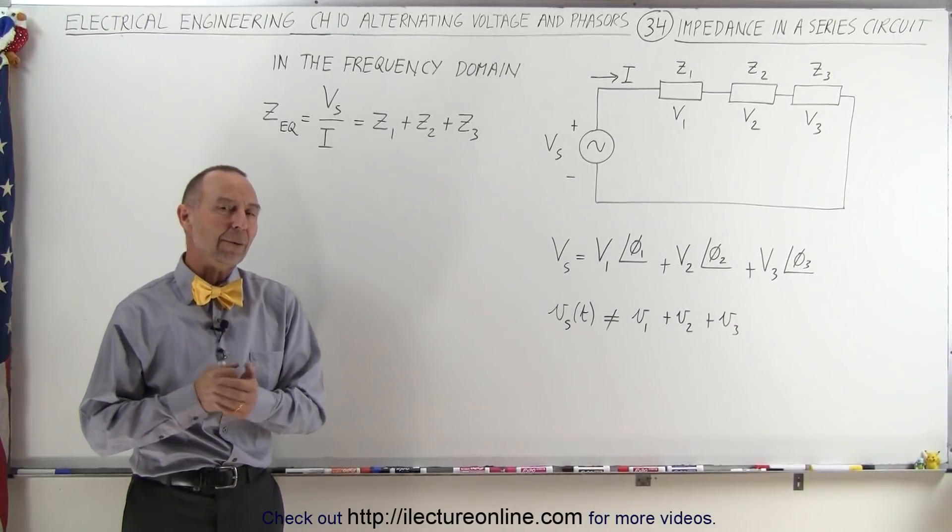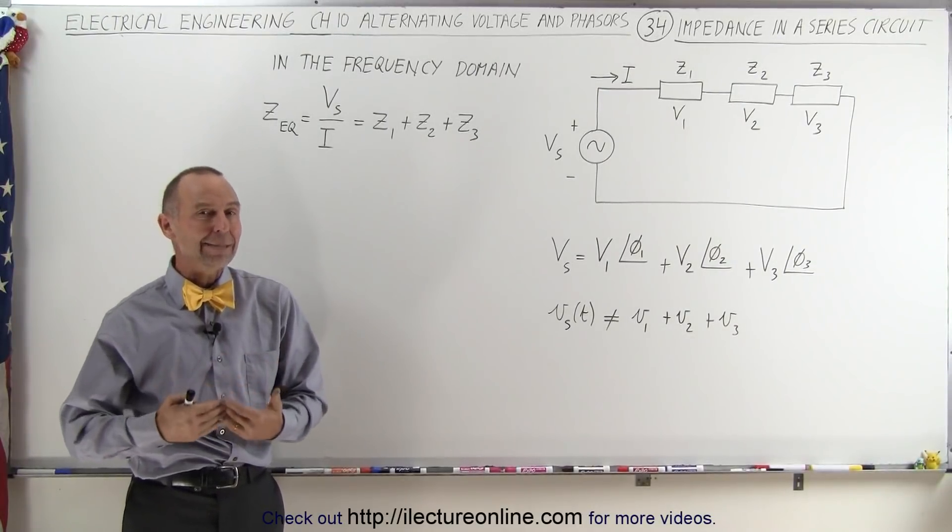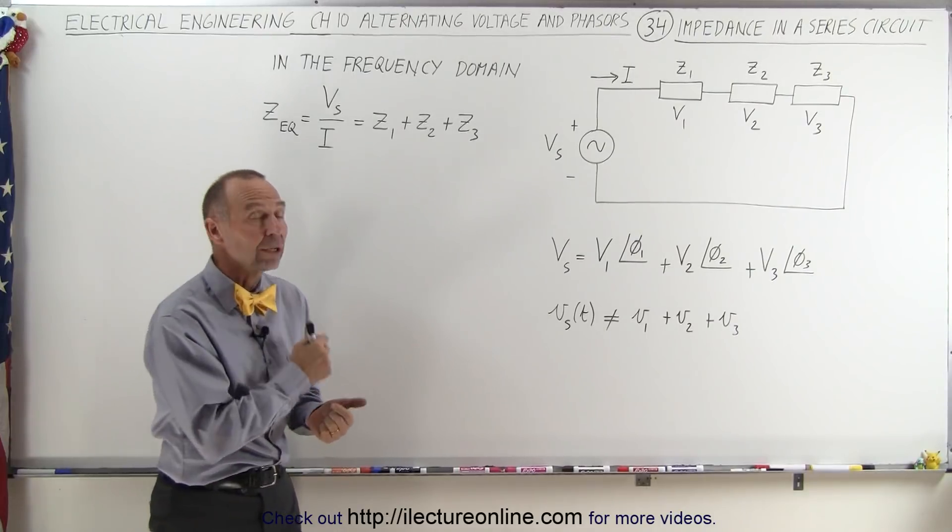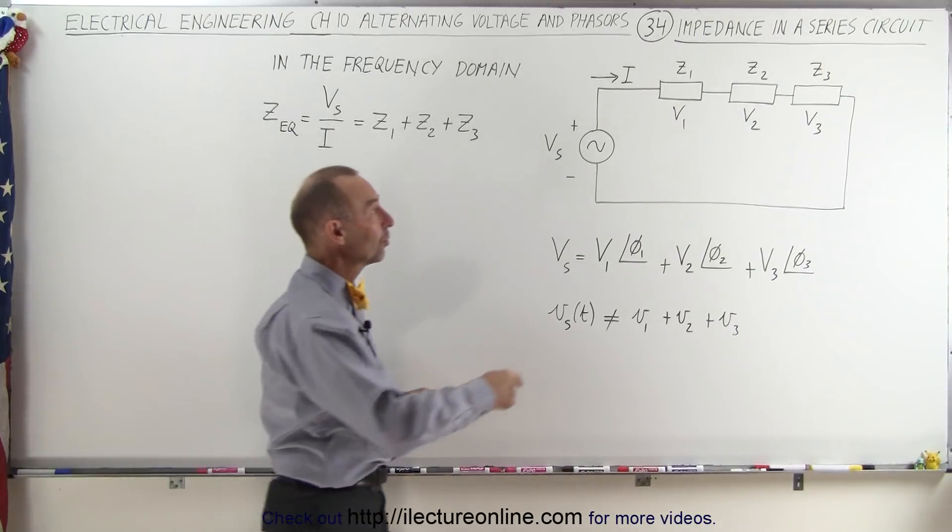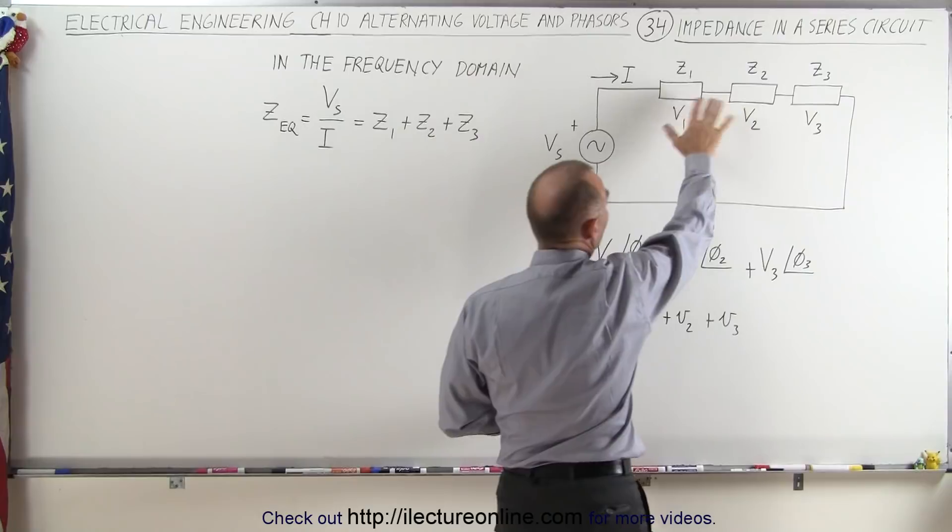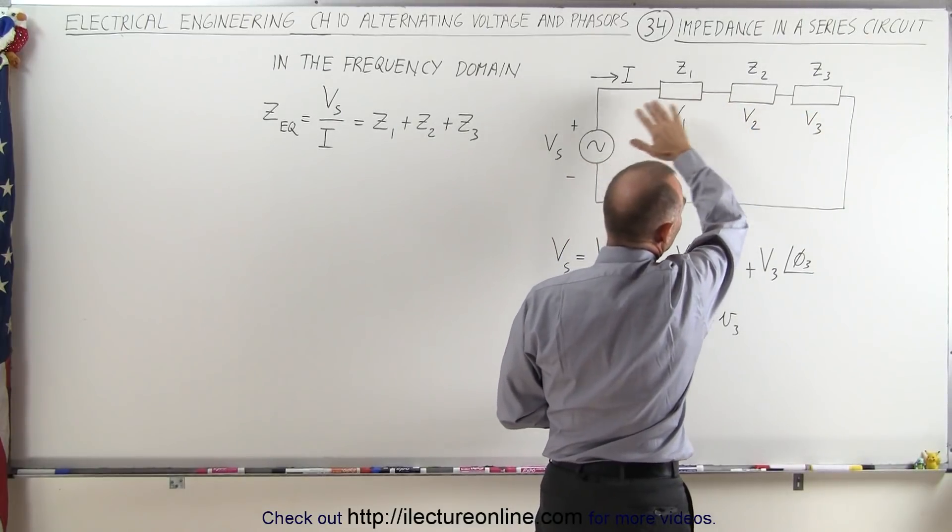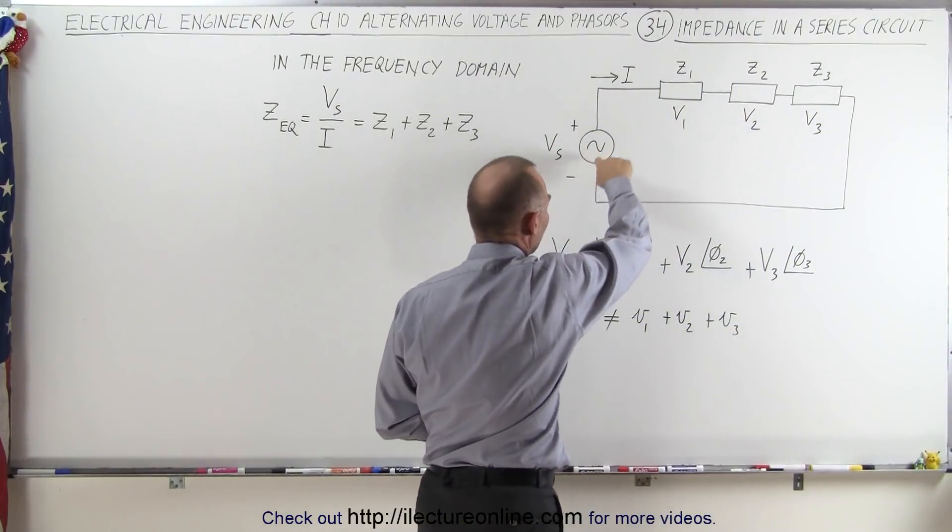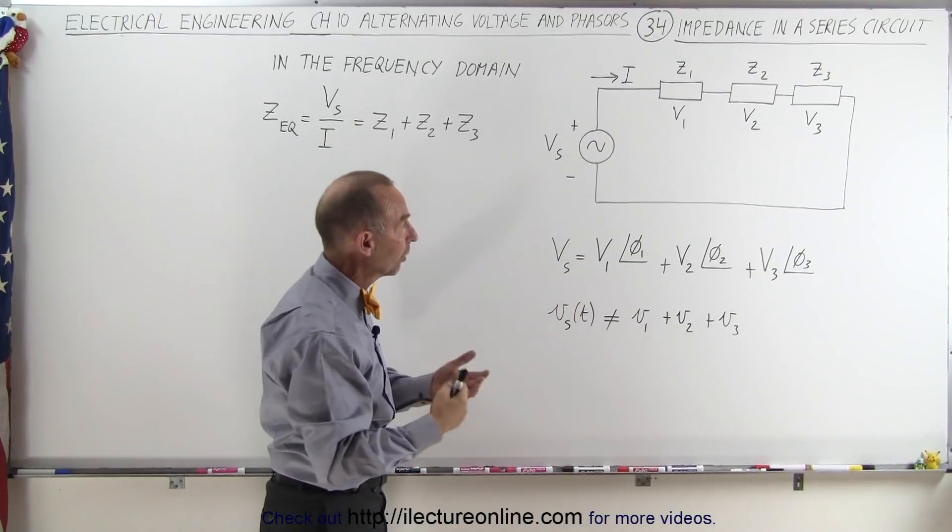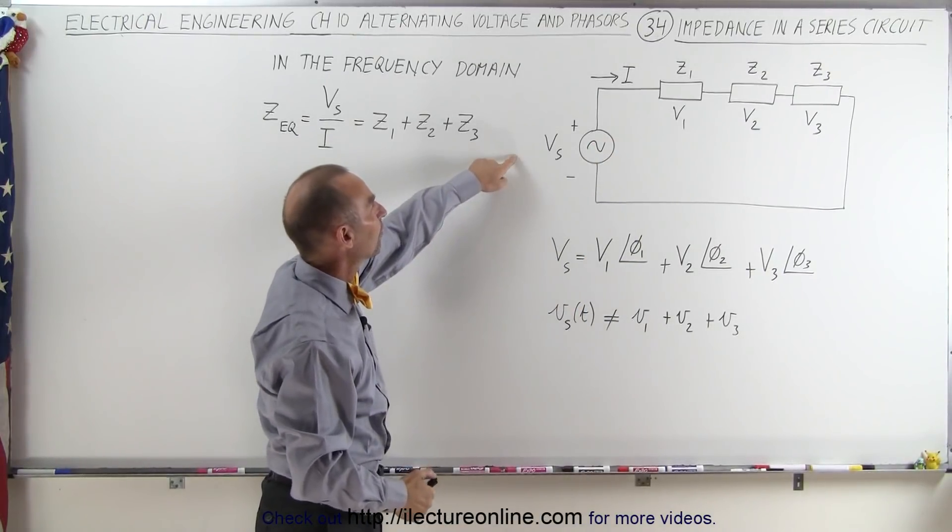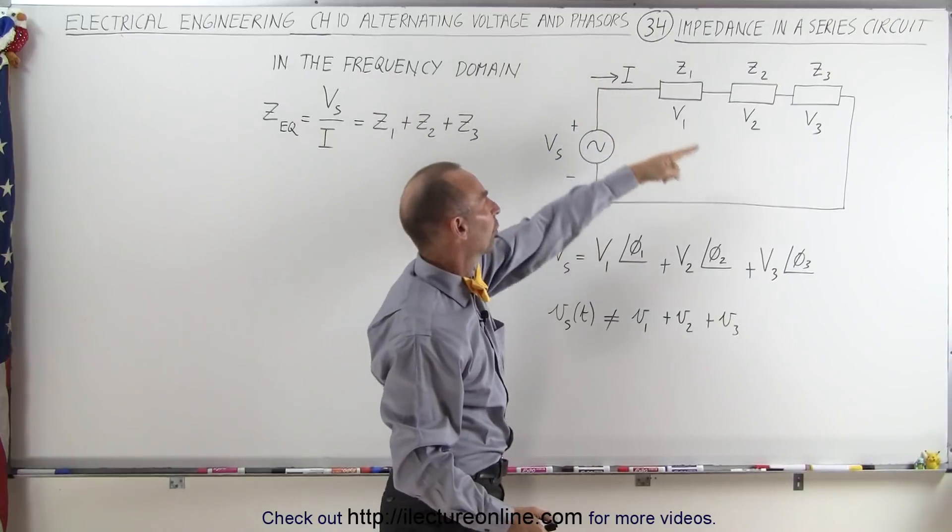Welcome to our lecture online. Now we're going to take a look at how we add impedances together, and we're starting with a series circuit. Notice that we have some capacitors, inductors, resistors in a series circuit with a voltage source, a sinusoidal voltage source, an alternating voltage source, and we have the current flowing through the circuit.